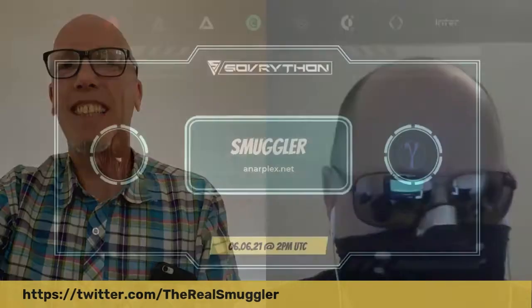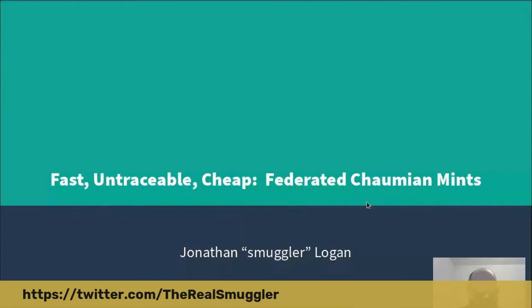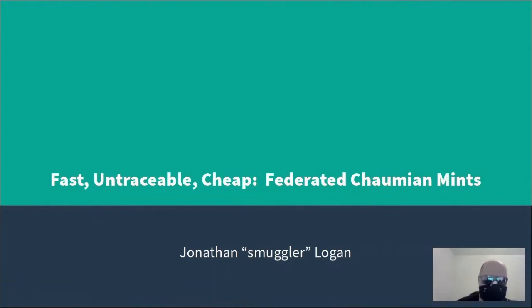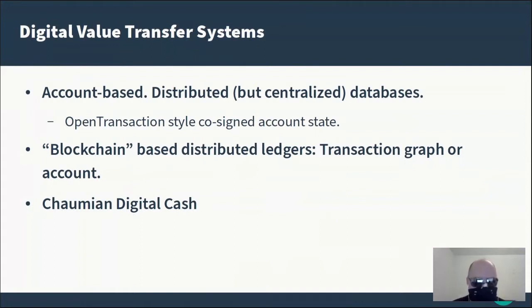Today I want to speak about something that is new to most people — fast, untraceable, cheap, federated Chaumian mints. That requires some explanation. There are essentially three big technologies that implement digital value transfers or payments, if you want to say so.